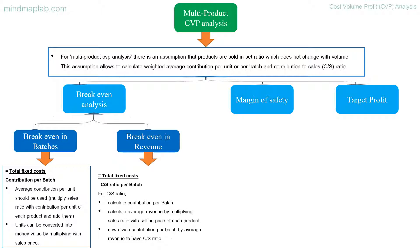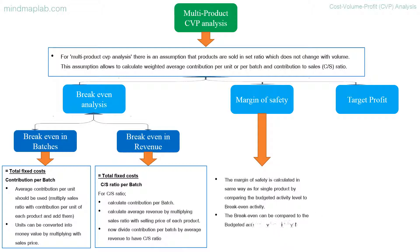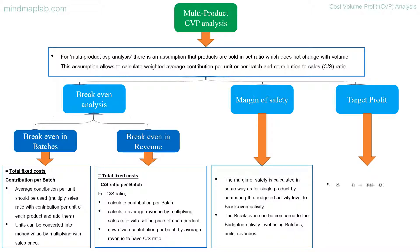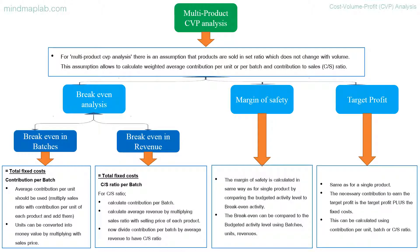The margin of safety for multi-product analysis is calculated in the same way as for a single product, by comparing the budgeted activity level to break-even. Break-even can be compared to the budgeted activity level using batches, units, or revenues. For target profit, the computation is the same as for a single product — the necessary contribution to earn the target profit is target profit plus fixed costs — and this can be calculated using contribution per unit, per batch, or the CS ratio.